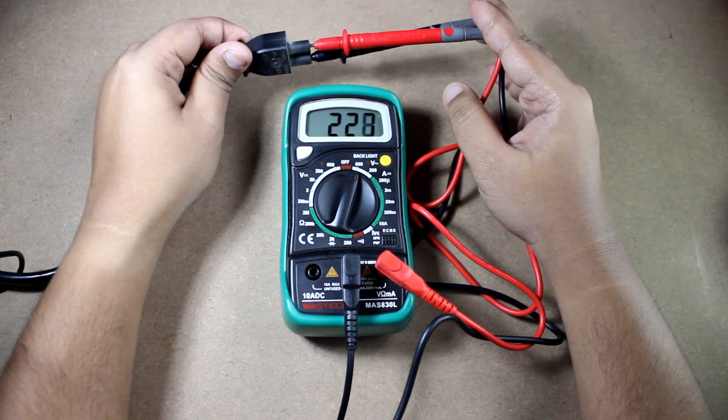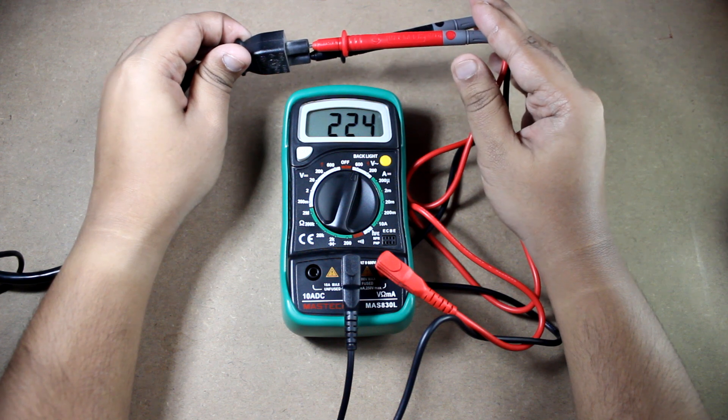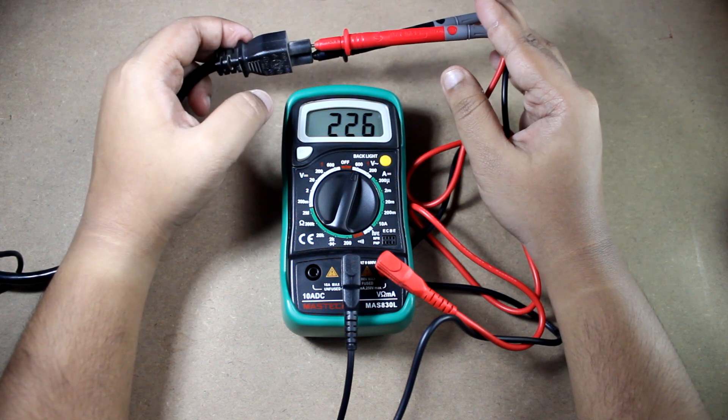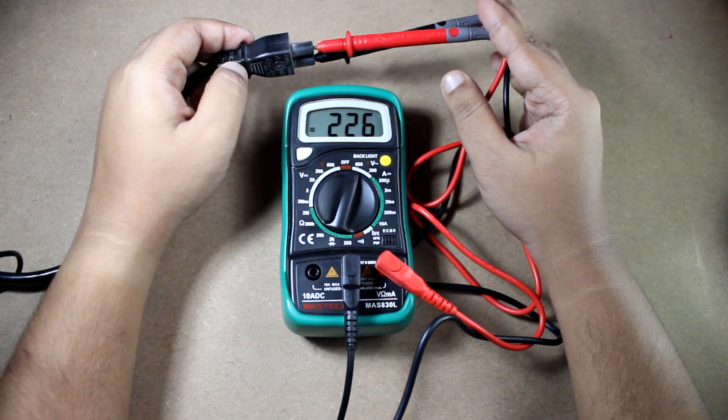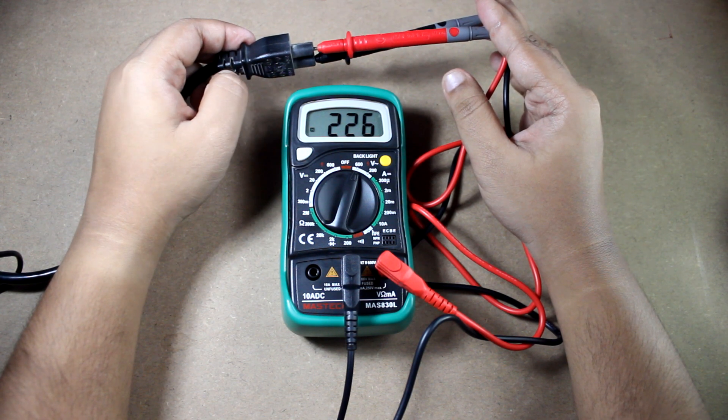226 volt AC, it's okay. Now if you want to keep that reading, press hold. The reading will be fixed. Remove the probes carefully from the socket.